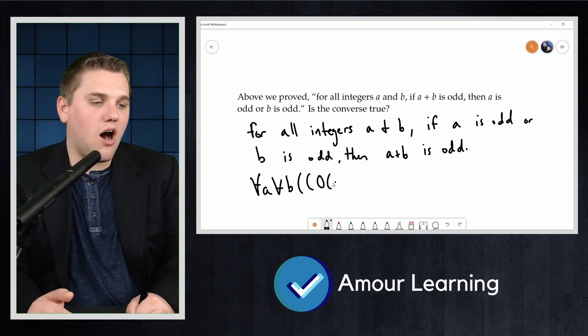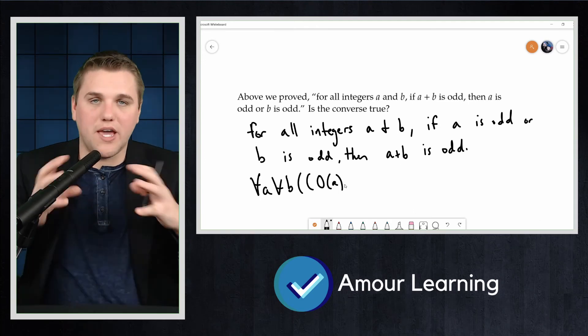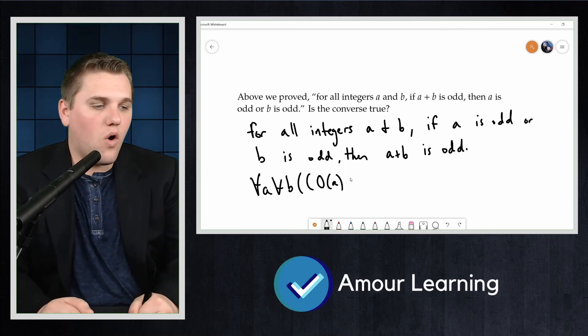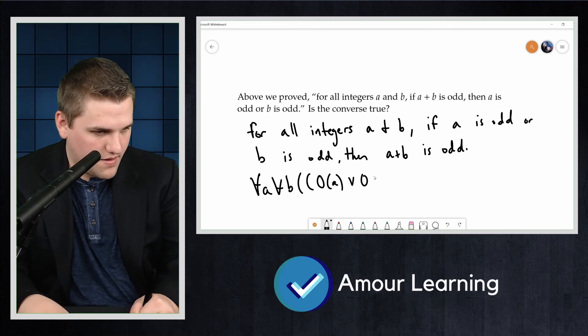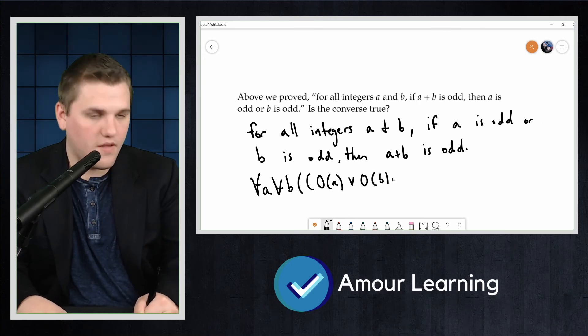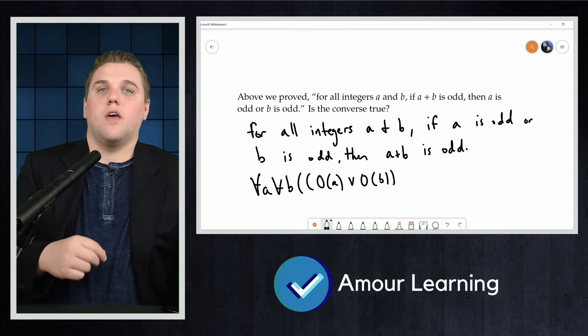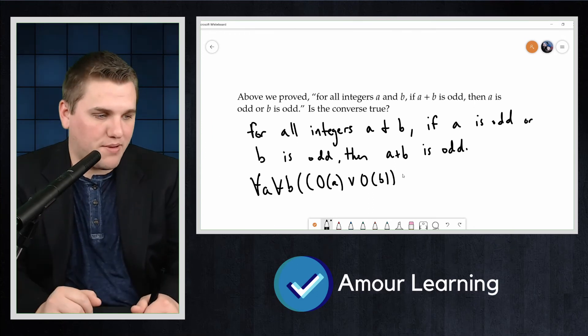A being odd, we'll use the big O for odd, a is odd, or b is odd, implies that a plus b is odd.